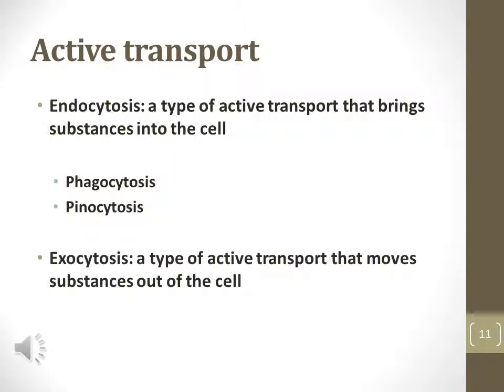Endocytosis is a type of active transport that brings molecules into the cell. The molecules are engulfed into the cell by forming a vesicle out of the plasma membrane. The molecules move toward the plasma membrane, and the plasma membrane forms a vesicle around the molecules. The vesicle then moves inside the cell.